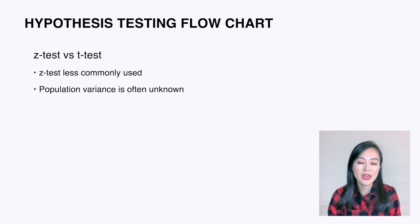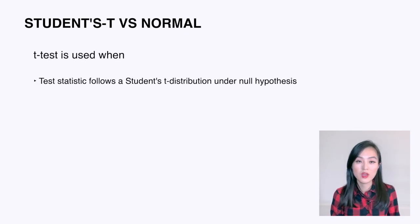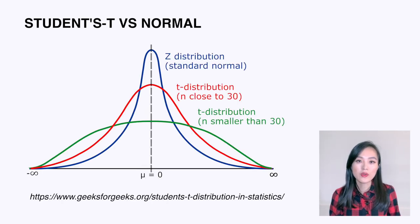Now it's clear when to select a particular test. I want to highlight two things for more clarity. The first thing is the difference between the Student t-distribution and the normal distribution. We use a t-test when the test statistic follows a Student t-distribution under the null hypothesis. Here's a diagram showing the comparison of the t-distribution and z-distribution, or standard normal distribution.